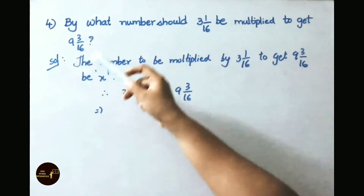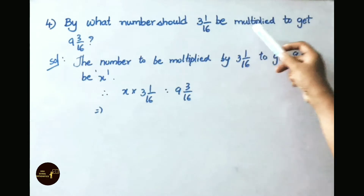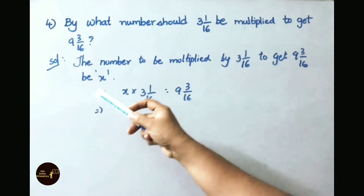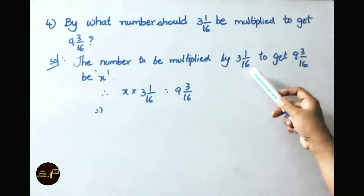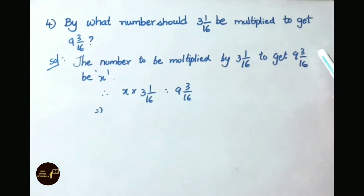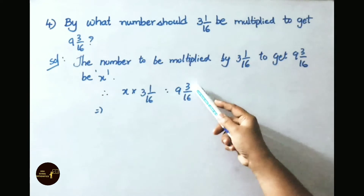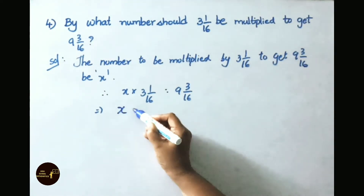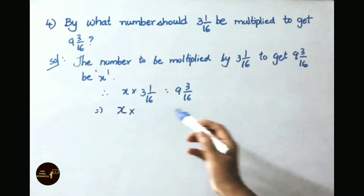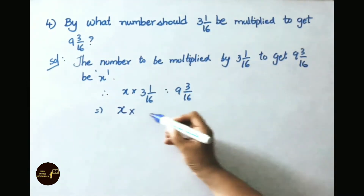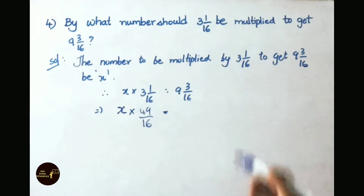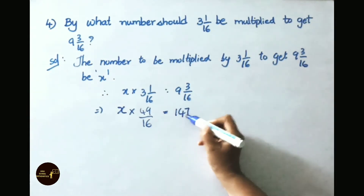See now question number 4. By what number should 3 and 1 by 16 be multiplied to get 9 and 3 by 16? Let us see the solution now. Let the number to be multiplied be x. Therefore x times 3 and 1 by 16 equals 9 and 3 by 16. Converting to improper fractions: 16 times 3 plus 1 is 49 by 16, and 16 times 9 plus 3 is 147 by 16.